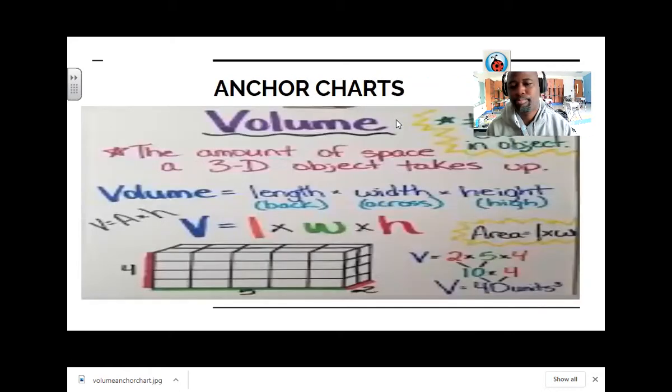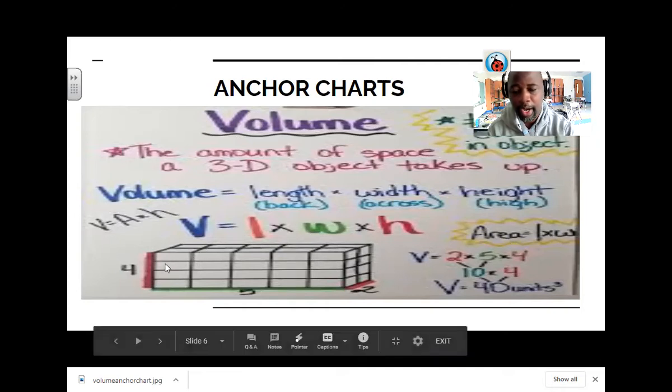Here's a copy of an anchor chart. It shows you, gives you the definition of volume, gives you the formula for volume, one of them anyway. It tells you your area is your length times your width. Then it gives us a volume, a cubic figure right here. We got 4 as our height, 5 as our length, and 2 as our width. Of course, the cubes inside the figure match the number. So we got 2 cubes going from front to back. We got 1, 2, 3, 4, 5 cubes going across. And we got 4 cubes going up and down.